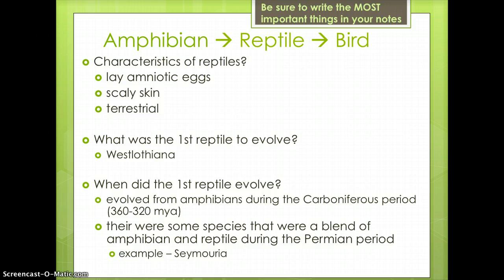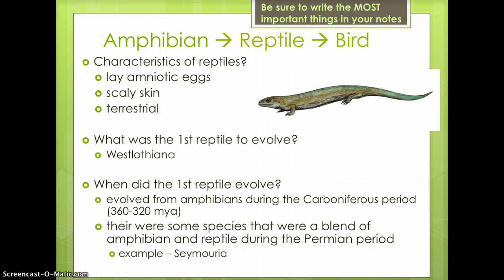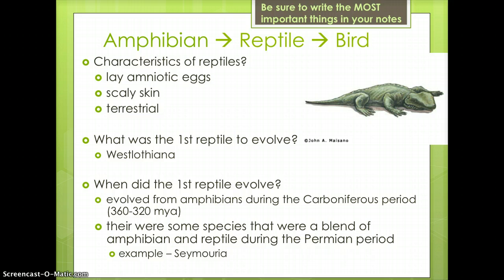Amphibians eventually evolved into reptiles. Reptiles have amniotic eggs, which means they can be laid on land, scaly skin, and they are terrestrial, meaning they live on land. The first reptile to evolve from amphibians during the Carboniferous period, about 360 to 320 million years ago, was Westlothiana, shown here. During the Permian period, there were some species that were a blend of amphibians and reptiles. An example is Seymouria, shown here.